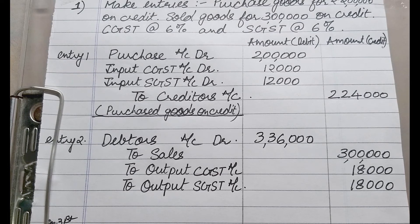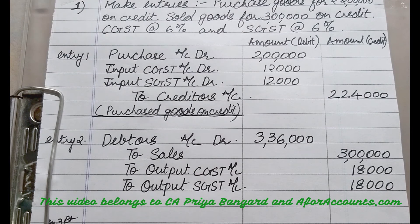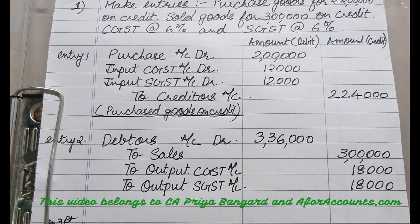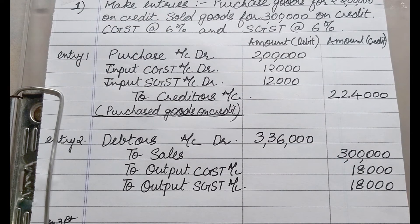Sold goods for 3 lakh on credit, CGST at the rate 6% and SGST at the rate 6%. When you are selling, the entry should be: debtors account debit, to sales. Sales is given in the question as 3 lakh. Now on 3 lakh at 6%: 3 lakh × 6 ÷ 100 = 18,000. So output CGST is 18,000 and output SGST is 18,000. So 3 lakh + 18,000 + 18,000 = 3 lakh 36,000. So debtors account debit 3 lakh 36,000.